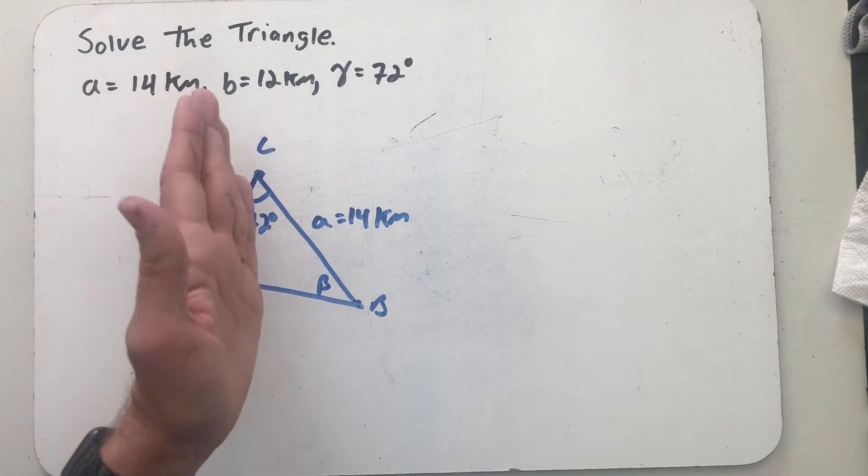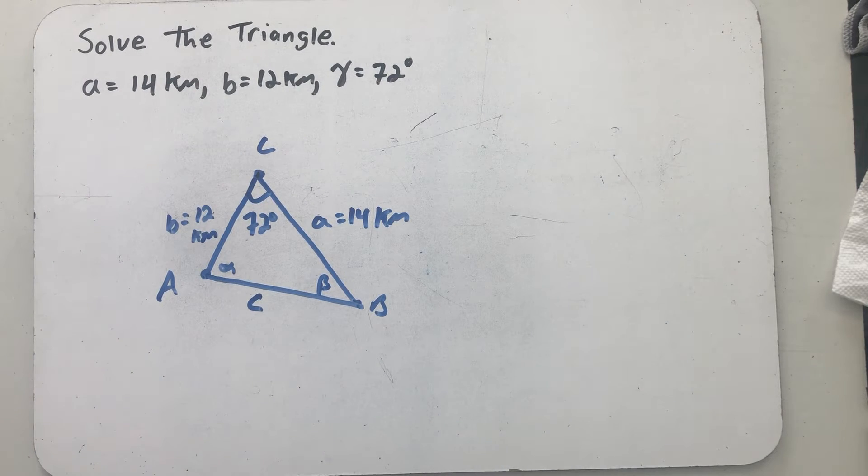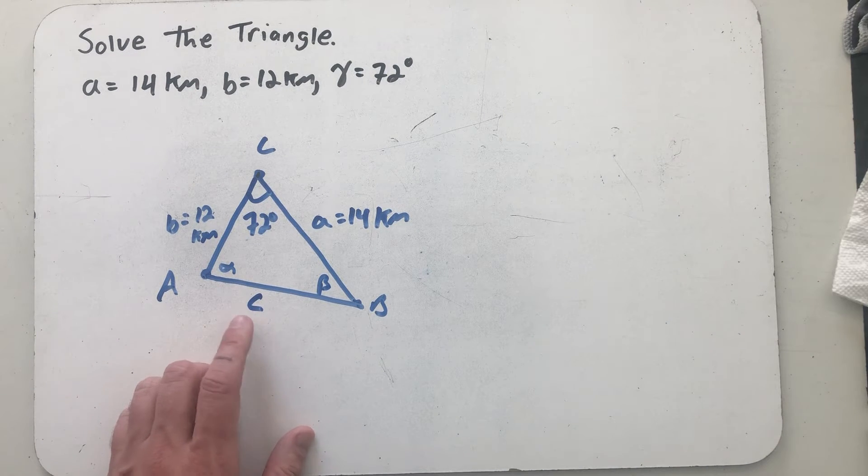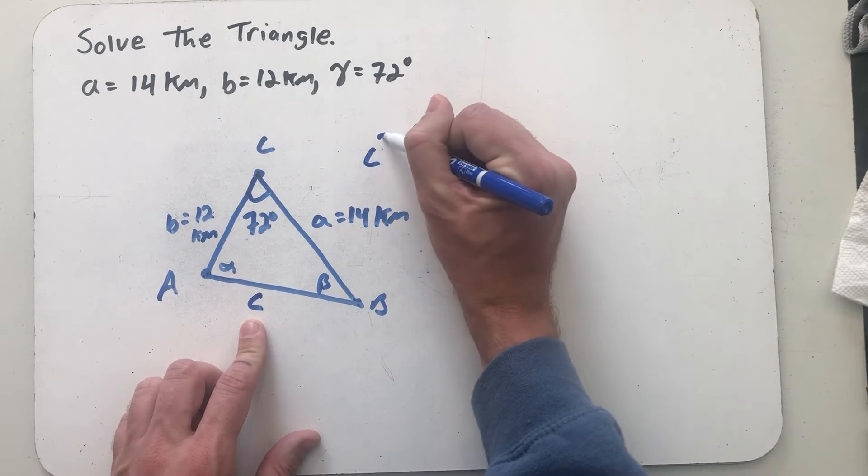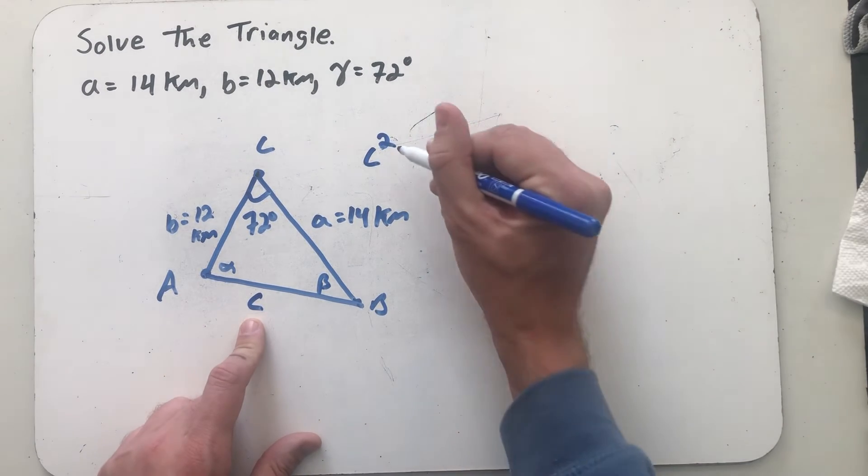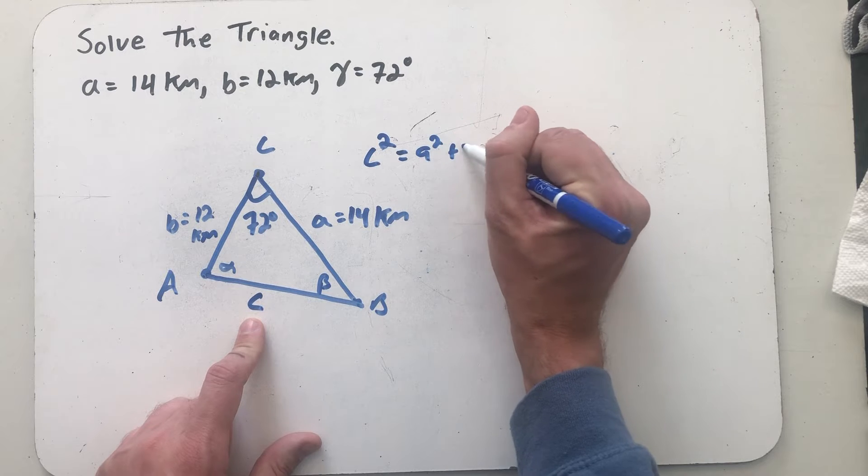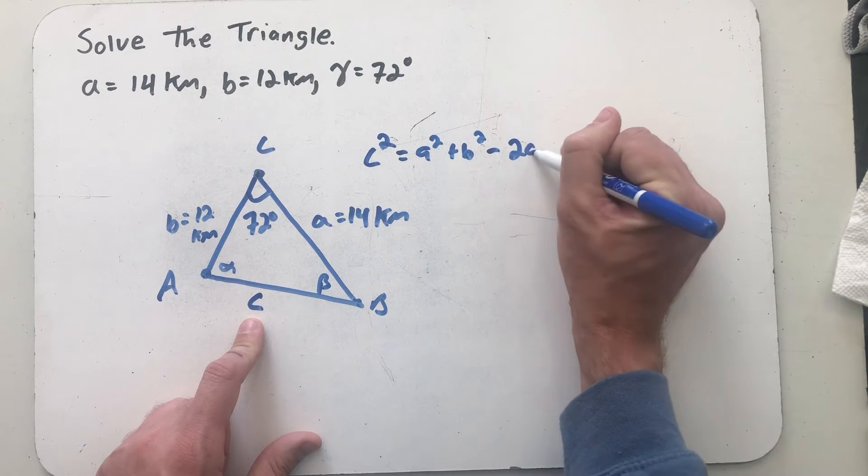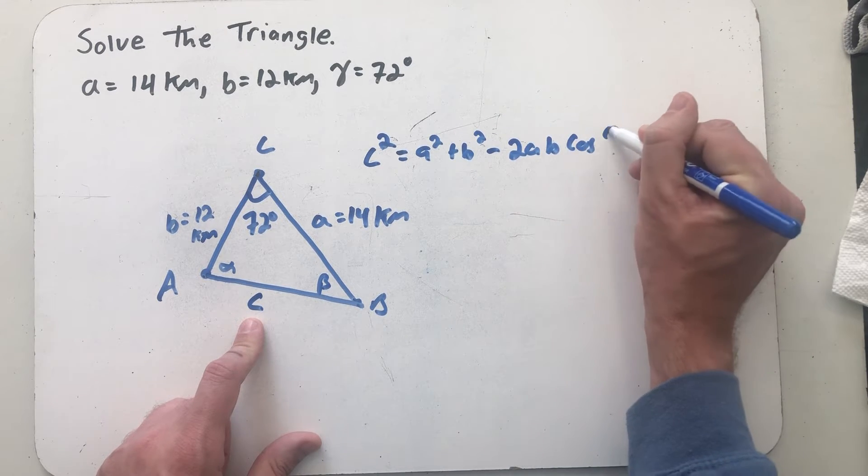And I see a side angle side triangle, so I'm thinking I'm going to have to use the law of cosines, and especially to find this missing side first. So law of cosines tells me that C squared is equal to A squared plus B squared minus 2 times AB cosine of gamma.